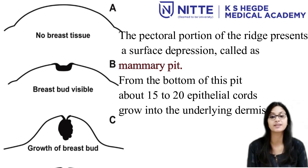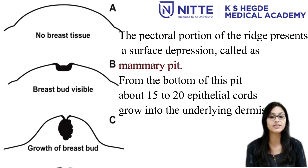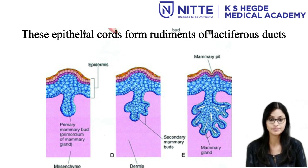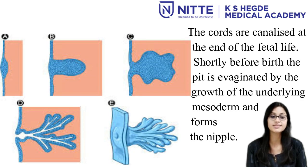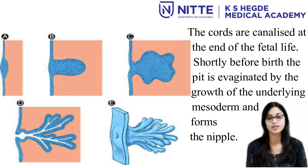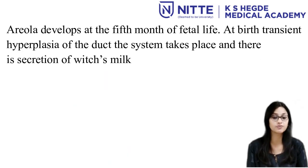The pectoral portion of the ridge presents a surface depression called the mammary pit. From the bottom of this pit, about 15 to 20 epithelial cords grow into the underlying tissue. These epithelial cords form the rudiments of the lactiferous ducts. The deeper ends of the cords subdivide further and terminate as budded ends. The cords are canalized at the end of fetal life. Shortly before birth, the pit is evaginated by the growth of underlying mesoderm and forms the nipple. The areola develops at the 5th month of fetal life.